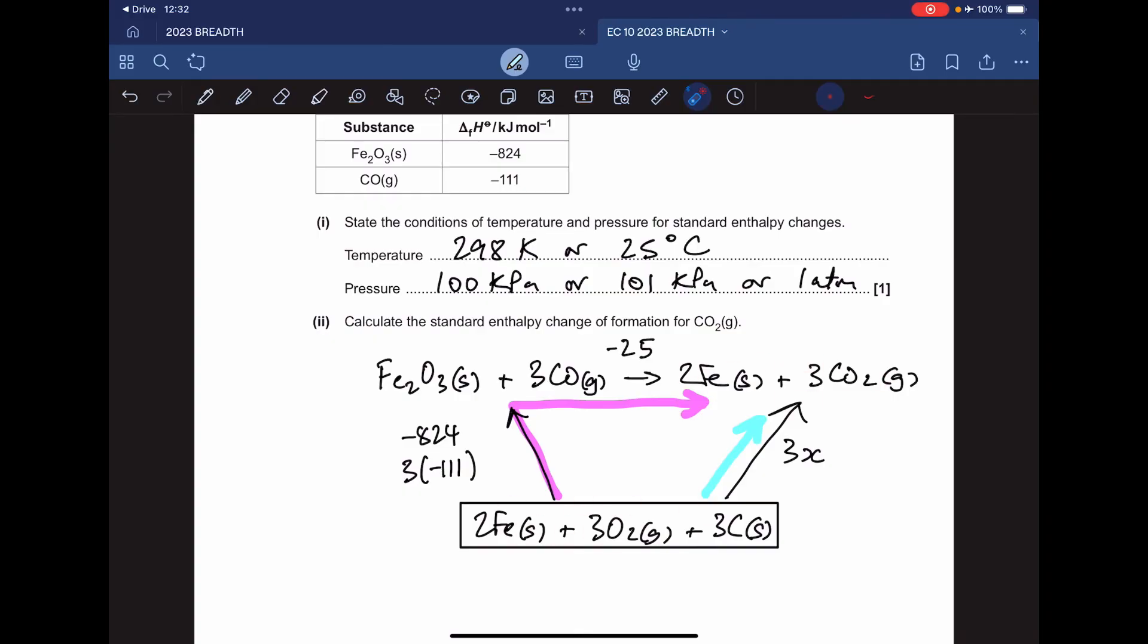Now thinking about Hess's law, we've got two routes to go from here to here. We've got this pink route which includes these enthalpy changes, and this blue route to go directly. Hess's law says it doesn't matter which way you go as long as you start and finish at the same place. So the sum of the enthalpy changes in the pink route equals the enthalpy change of the blue route.